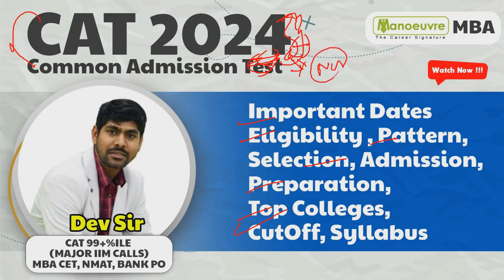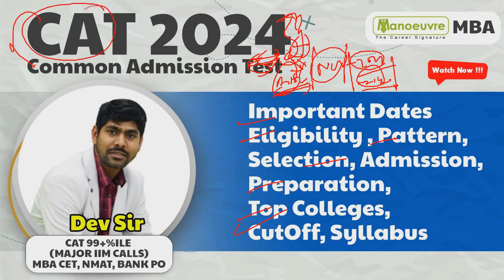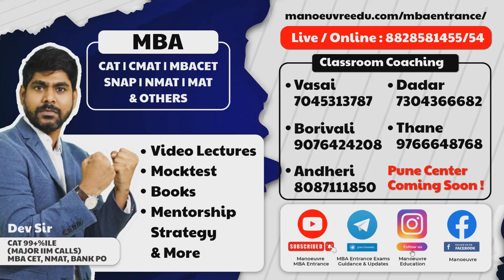The ideal CAT exam date for 2024 is in the first week of August — so you have more than one year in hand. Save this video. If you want to crack CAT and need a good college admission, start your preparation now.